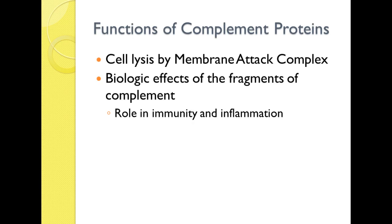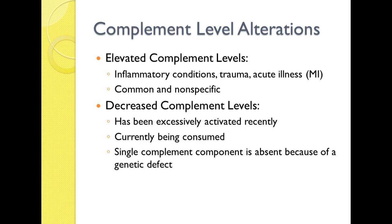In general, the function of the complement proteins is to lyse the cell by the membrane attack complex. The biological effects of the fragments of complement play a role in immunity and inflammation. Elevated complement levels are seen in inflammatory conditions, trauma, and acute illness — it's common and not specific. You can't just say someone has elevated C3 and conclude they have lupus; further testing is needed. Decreased complement levels can be caused by excessive recent activation, current consumption, or a genetic defect.